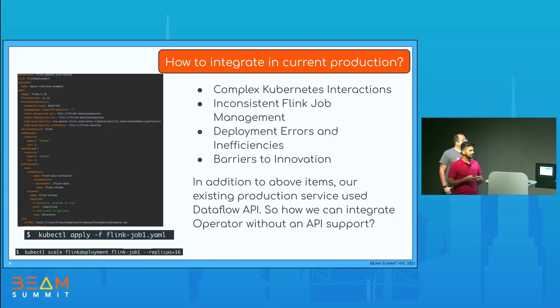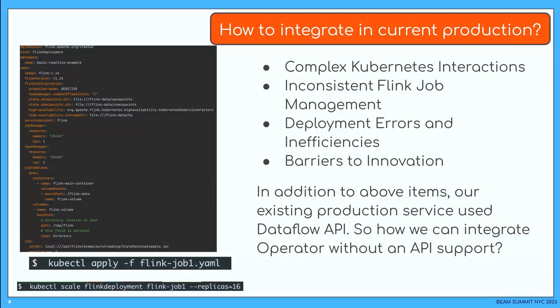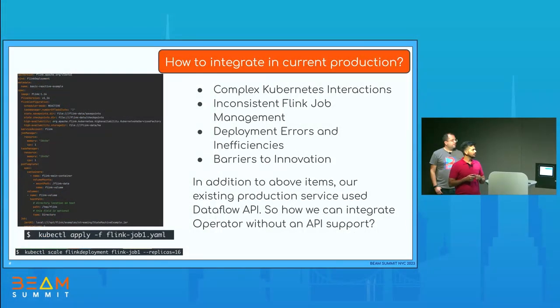To deploy using the Flink Kubernetes Operator, you create a YAML file — you specify your Flink version, resources, and your jar file, then run a kube command. If you want to scale up or delete a job, you again run kube commands. This is great for a few jobs, 5 to 10, but many teams need to do this. They all need to learn Kubernetes commands — how to submit, delete, or scale. If every team is managing this independently, there will be inconsistencies and deployment errors. For example, if I want to scale replicas to 16 and accidentally press zero, it becomes 160 task managers suddenly.